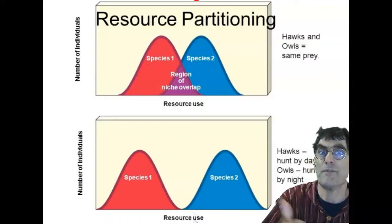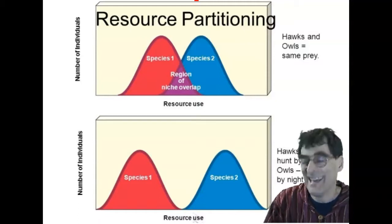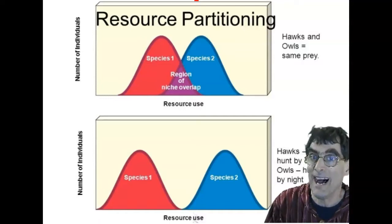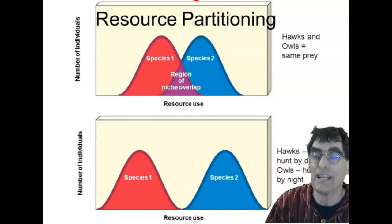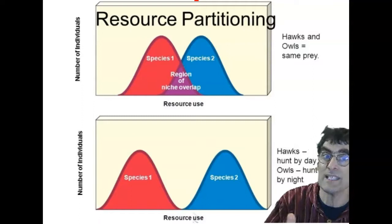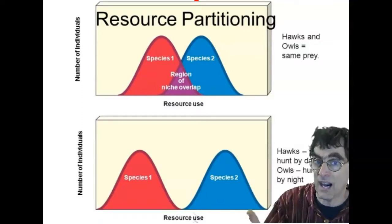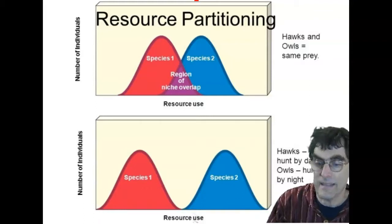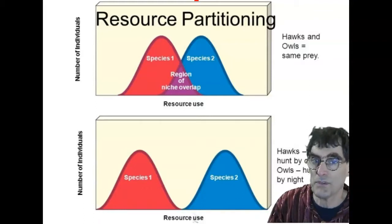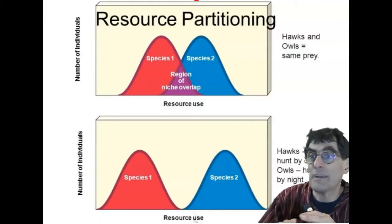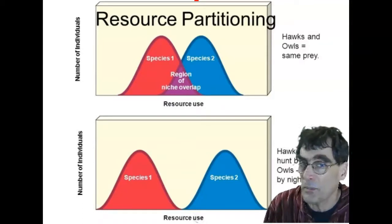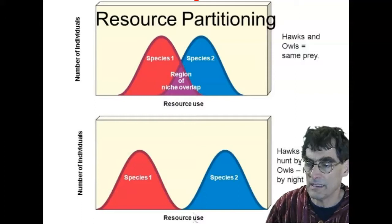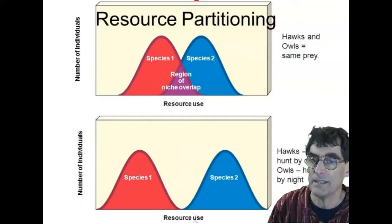So if hawks and owls have the same prey in that middle area, they're going to kind of divide it up. So in this case, perhaps the hawks are going to start hunting by day and the owls will hunt at night. That's the way they're partitioning their resources so that competition is reduced because no one wants to compete. Competition is no advantage to competition in this case.